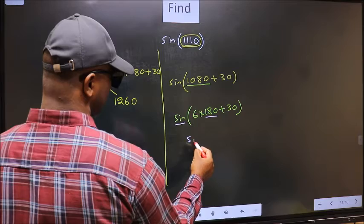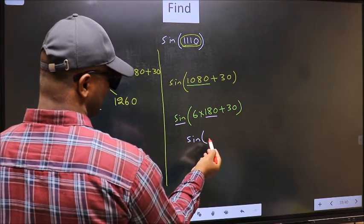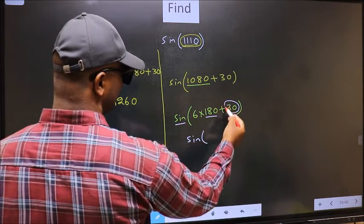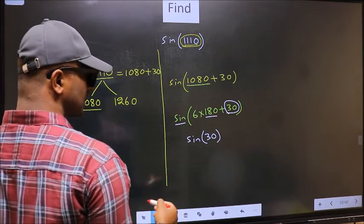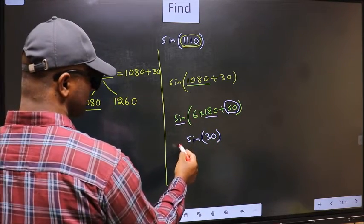So sine is not going to change. It will remain sine. And inside we get this angle 30. Now the question is, will we get here plus or minus?